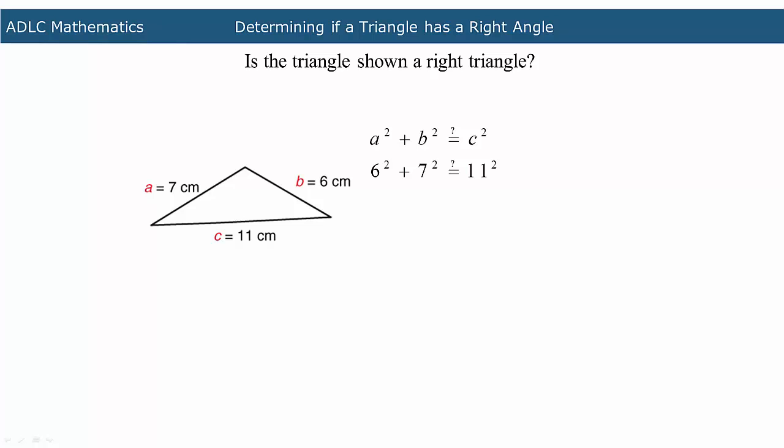When you find the squares of the values in the equation, the equation becomes 36 plus 49 equals 121. When you add 36 to 49, you are left with 85 centimeters squared, which is not equal to 121 centimeters squared.